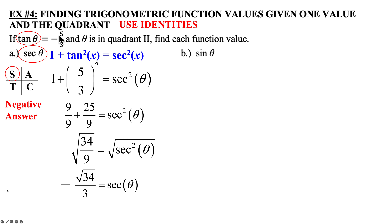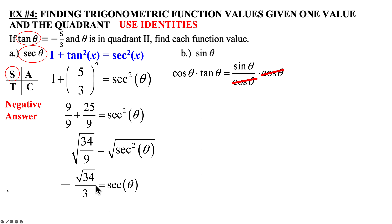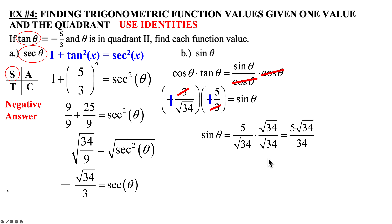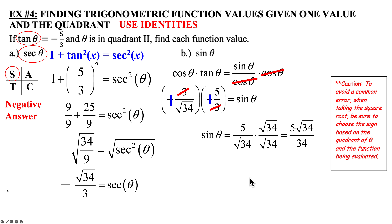For sine of theta, use the identity tangent theta equals sine theta over cosine theta. Multiply both sides by cosine theta to isolate sine theta. Tangent theta is negative 5 thirds, and cosine theta is the reciprocal of secant theta, so it's negative 3 over square root of 34. The negatives cancel to positive, and the threes cancel, giving sine theta equals 5 over square root of 34. Rationalize by multiplying top and bottom by square root of 34, giving 5 square root of 34 over 34. Caution: when taking the square root, always choose the sign based on the quadrant of theta and the function being evaluated.